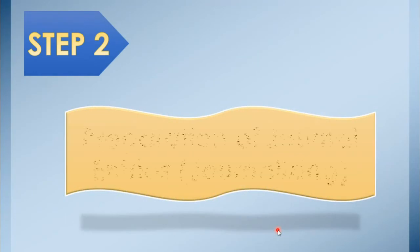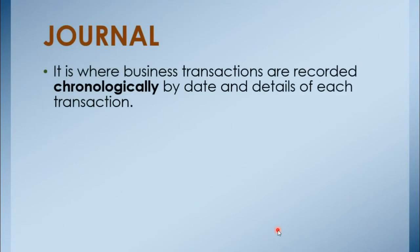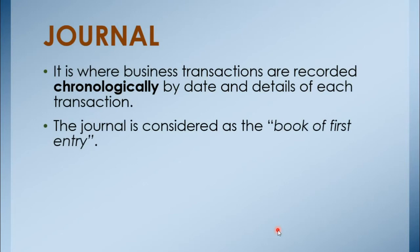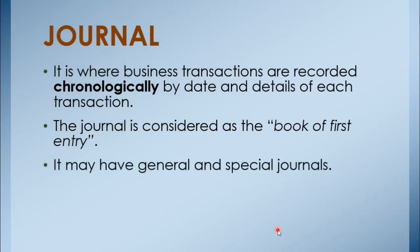After analyzing transactions, step two is all about the preparation of journal entries, or journalizing. First, let us define journal. This is where business transactions are recorded chronologically by date and details of each transaction. The journal is considered the book of first entry — meaning this is where we first list all financial transactions of the business, whether payments, purchases, or receipts. It may have general and special journals.